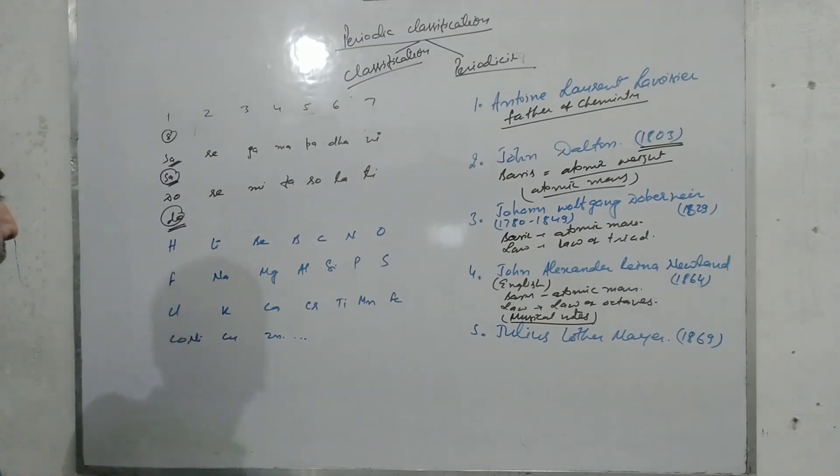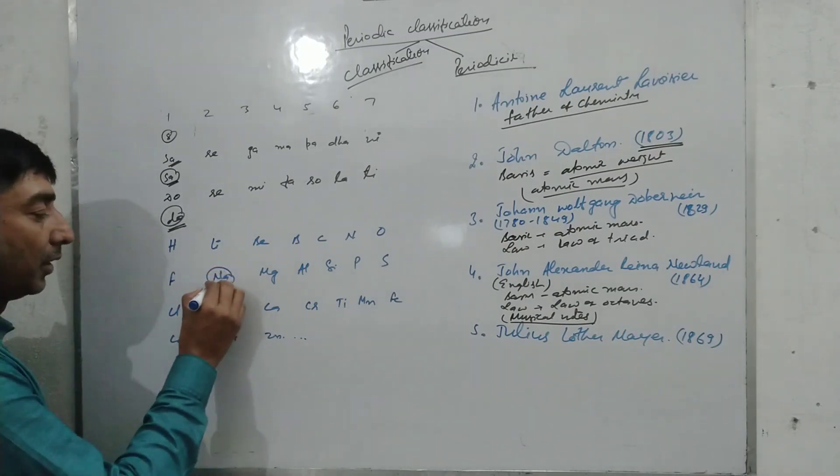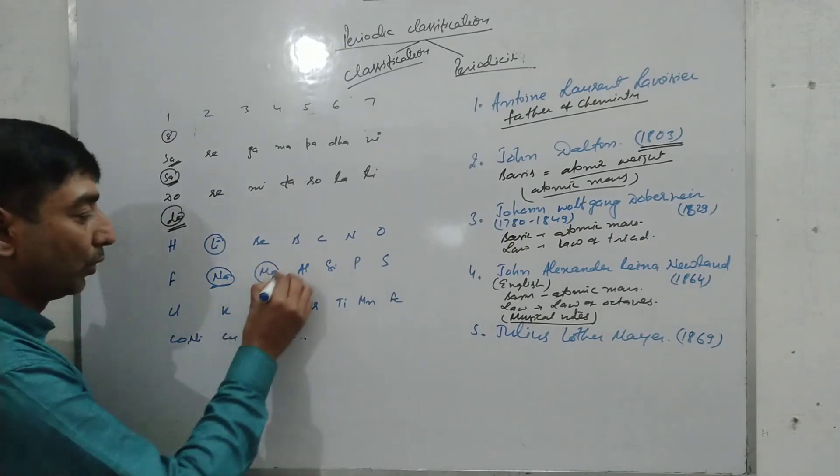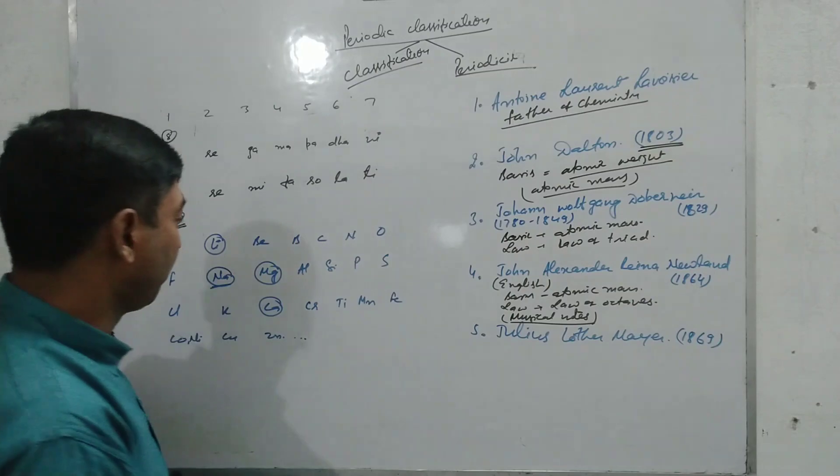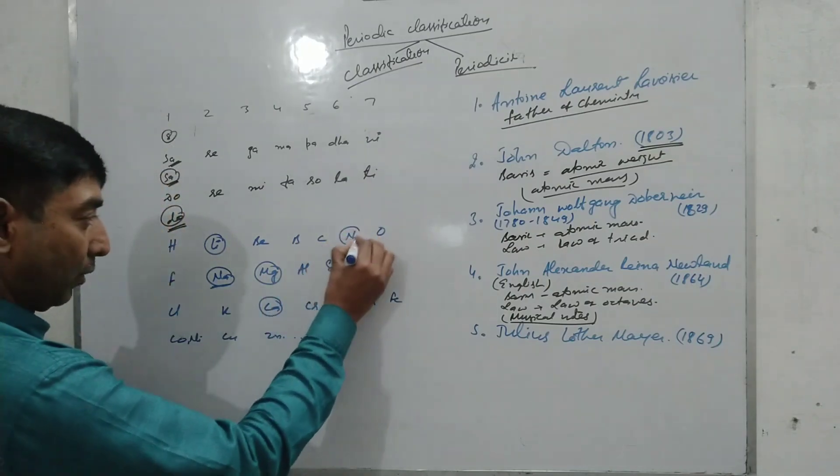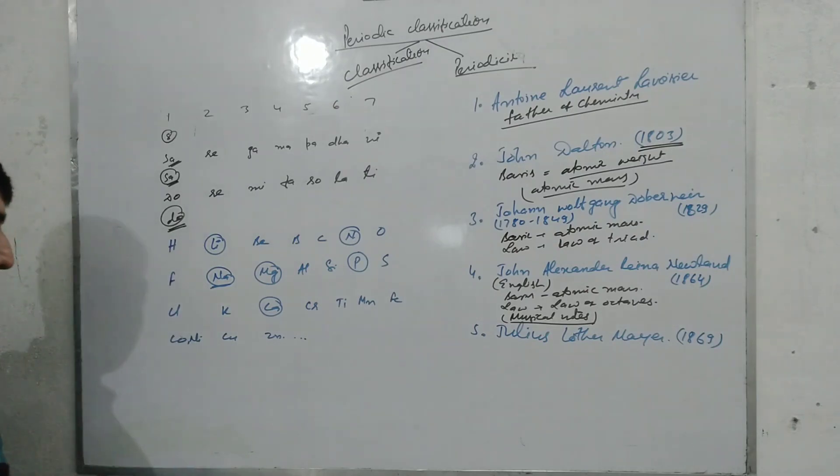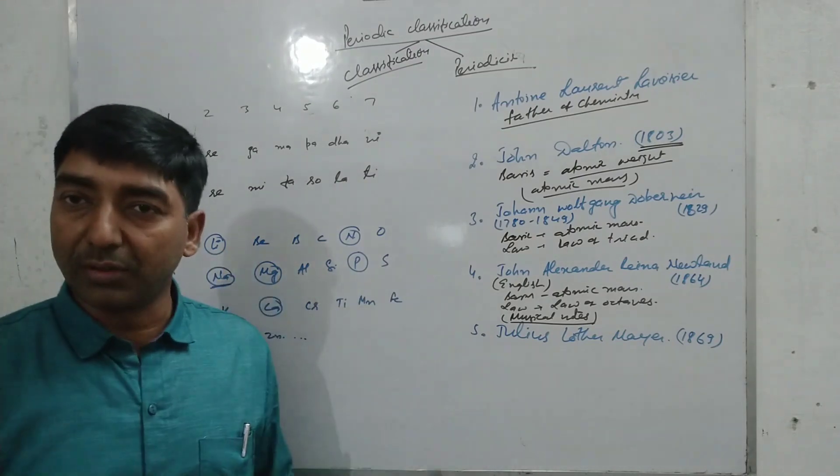According to this classification, every eighth element has similar properties with its first element. Like sodium has similar properties with lithium, magnesium has similar property with calcium or calcium has similar property with magnesium, nitrogen has similar property with phosphorus, and so on.